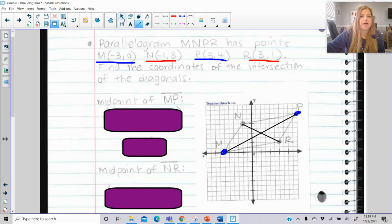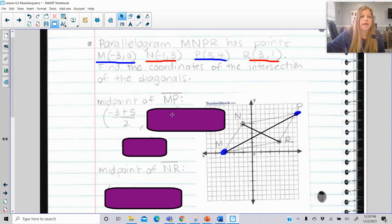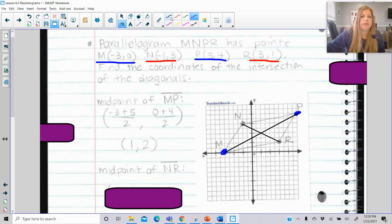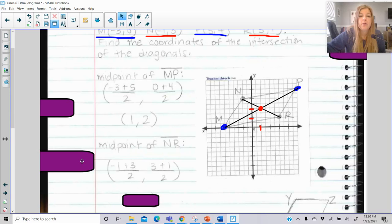So if I go ahead and calculate the midpoint from M to P, I would add up my X's, divide by 2, add up my Y's, divide by 2. And I end up getting 1, 2. Which you can see on my little diagram here, 1, 2 is definitely this ordered pair. 1, and then up 2. If I go ahead and I calculate the midpoint from N to R, and I add up my X's and divide by 2, add up my Y's, divide by 2, I get the exact same answer.